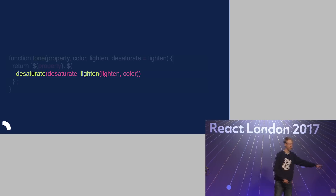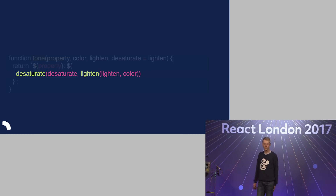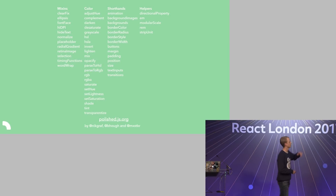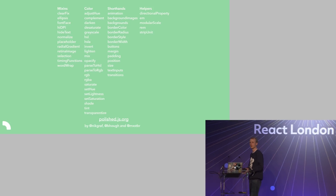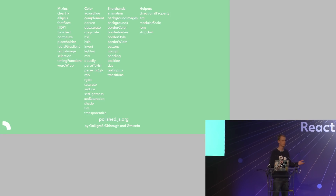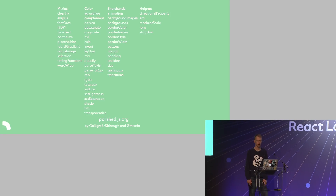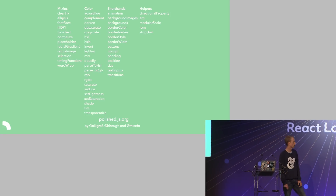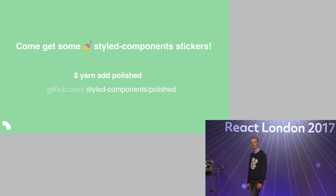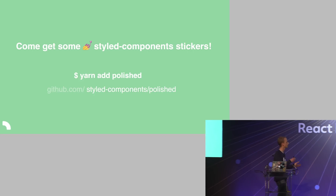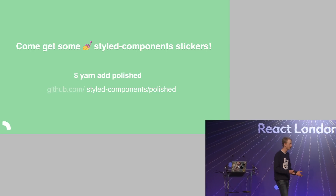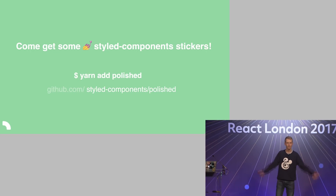Polished has a huge list of functions — color utilities, mixins, shorthands. We're really excited about this project because we think it's going to help a lot of people move towards styles in JavaScript. Polished works with whatever styles-in-JavaScript library you use. We just published it an hour ago — yarn add polished to install it. We're on GitHub at github.com/styled-components/polished. If you have ideas for new helpers or find bugs, let us know. Thank you very much.